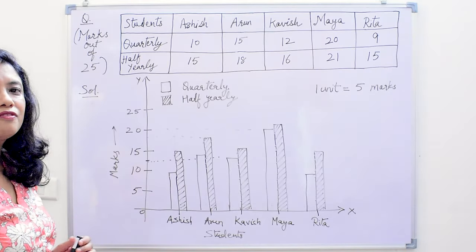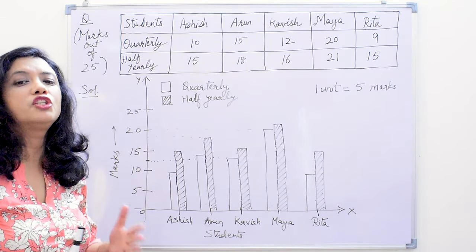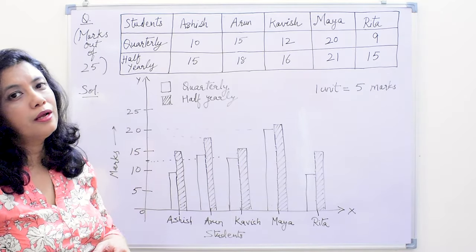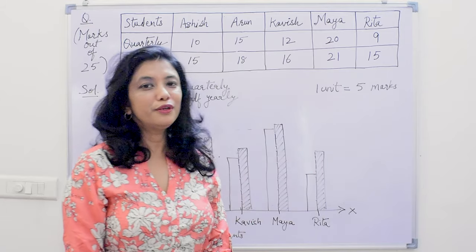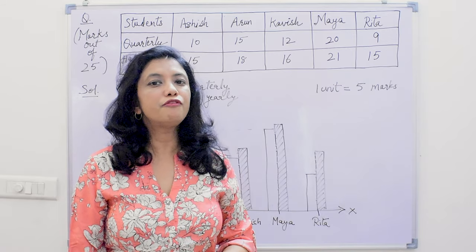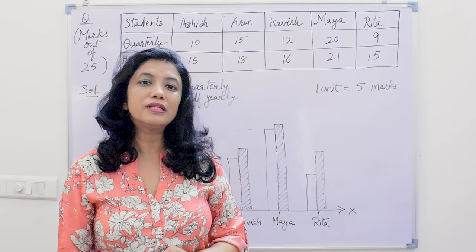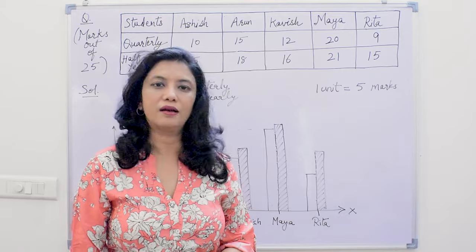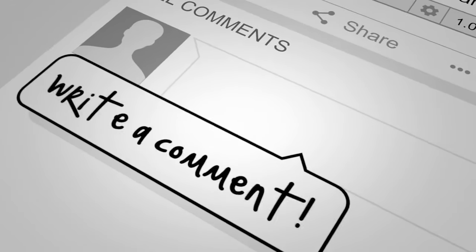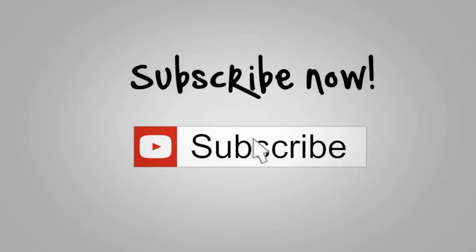In double bar graphs it is very necessary to mention which bar is representing which data, and the bars should be of different color or different pattern. Bar graphs are the representation of data in the form of bars on a graph, and when we plot two datasets on the same graph they are called double bar graphs.